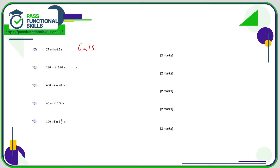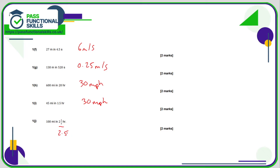130 divided by 520 is 0.25 metres per second. 600 divided by 20 is 30 miles per hour. 45 divided by 1.5 is 30 miles per hour. And finally 100 divided by 2.5 — on the calculator that is going to be 2.5 — works out as 40 miles per hour.